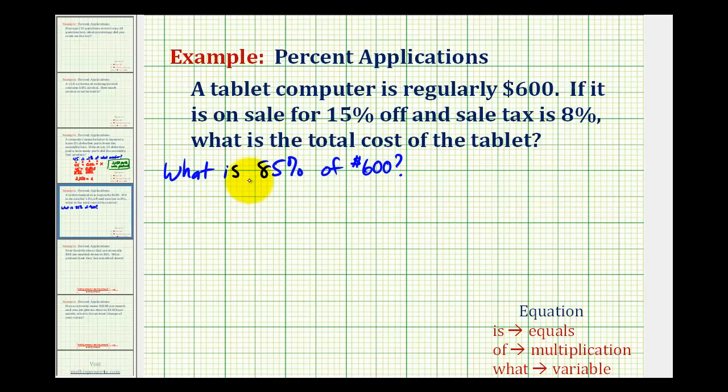Now we'll take this information and write the percent equation. So for what, we'll have x, is means equals, 85% as a decimal would be 0.85. Of means multiplication, and then we have $600.